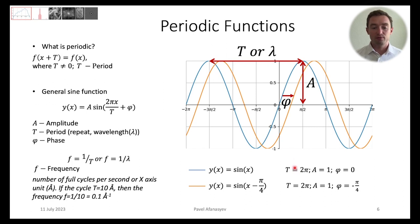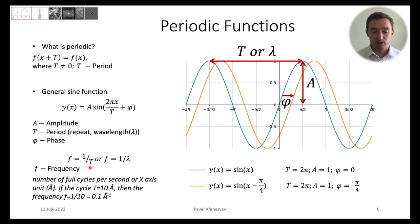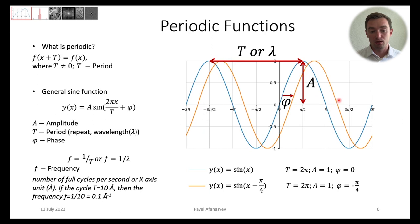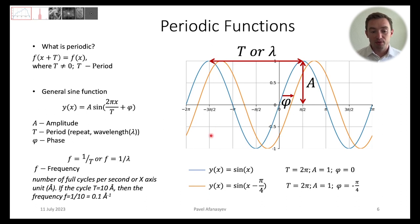In cryo-EM, it's important to talk about frequencies. Frequency is related to the period or wavelength as 1 over T. The frequency illustrates how fast the function will be changing, and it's defined as the number of cycles per second or x-axis unit. In cryo-EM, we focus on defining any function using three variables: amplitude, phase, and frequency.